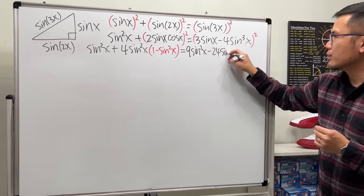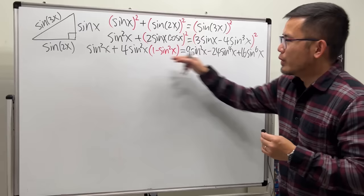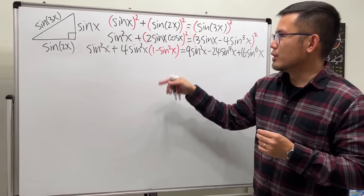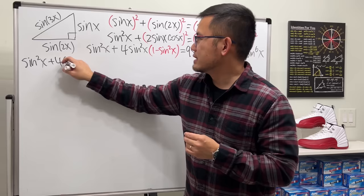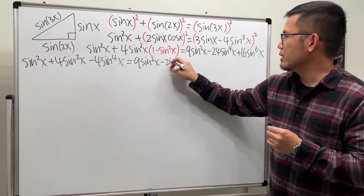And lastly, squaring the last term gives plus 16 sine to the sixth power. So we have an equation in terms of sine to the sixth power. Expanding fully, the left side is sine squared x plus 4 sine squared x minus 4 sine to the fourth power x. And that equals 9 sine squared x minus 24 sine to the fourth power x plus 16 sine to the sixth power x.